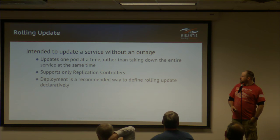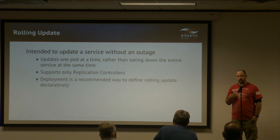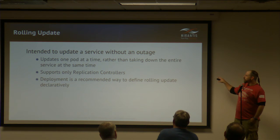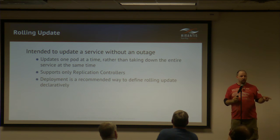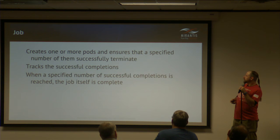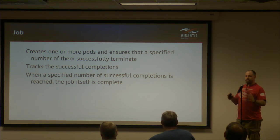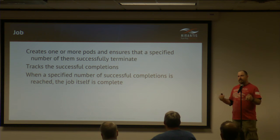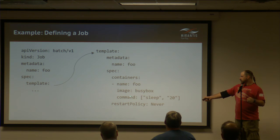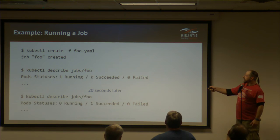Rolling updates in containers let the tooling do the work — aim it at the new image, point it at the old infrastructure, and let it roll forward with minimal intervention. You have levers to control how much updates at a time. Jobs are tasks you define to completion: the platform creates the infrastructure, performs the task, tears down the infrastructure, and marks the job complete. Even something as simple as waiting 20 seconds can be defined as a job with a YAML file and kubectl create.